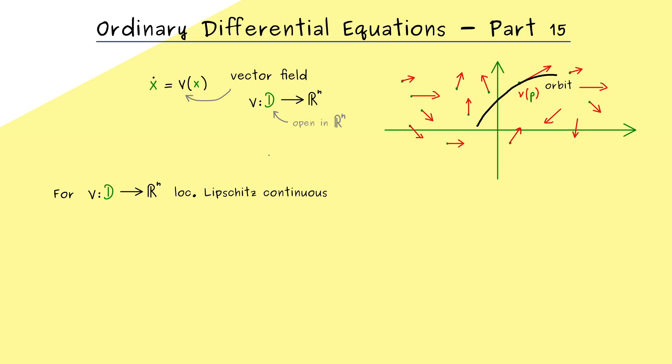The only restriction we want to put in is that v here is a locally Lipschitz continuous function. Because then we have our famous uniqueness and existence result for our initial value problem. And as in the last video, in order to keep the notation short, we will always write IVP with T0 and X0.